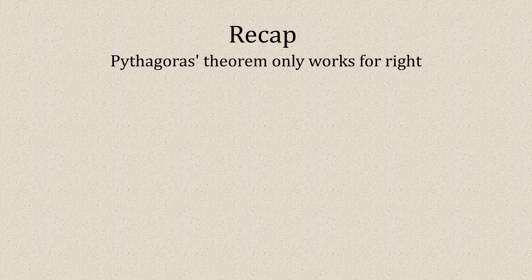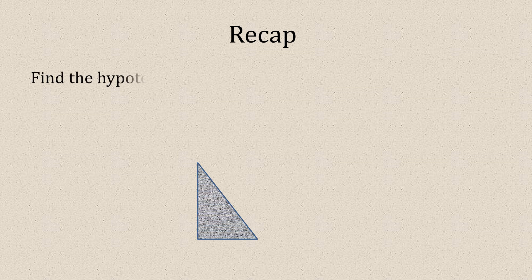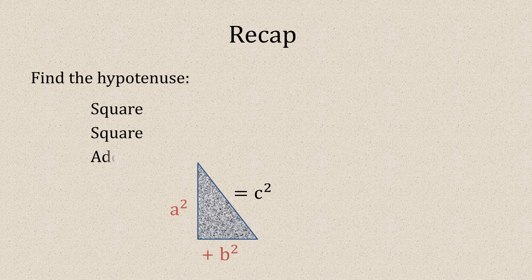So let's recap. Pythagoras' theorem only works for right-angled triangles. Now remember, the isosceles contains 2. So to find the hypotenuse, we use the formula square, square, add, square root.